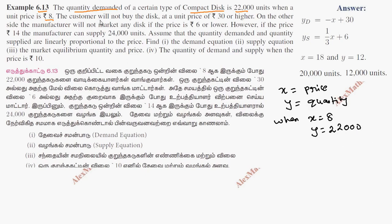Next, the customer will not buy the disc at a unit price of Rs. 30. So when the price is 30, the demand is 0. When X is equal to 30, Y is equal to 0.